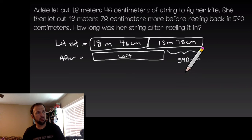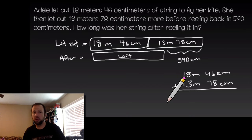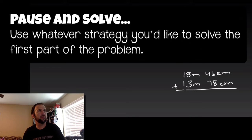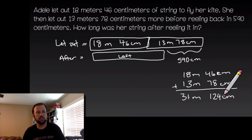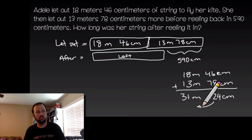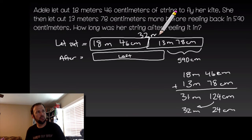So first we add 18 meters 46 centimeters plus 13 meters 78 centimeters. Adding those up: 46 plus 78 is 124 centimeters; 18 plus 13 is 31 meters. Since 100 centimeters equals 1 meter, I can take out 100 of those centimeters, giving me 32 meters and 24 centimeters left over. So the total she let out was 32 meters 24 centimeters.